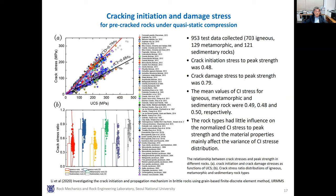This slide shows a very nice summary of the crack initiation and propagation mechanism of brittle rocks. The researchers collected 953 published test data for igneous, sedimentary, and metamorphic rocks. By fitting all data, they found that crack initiation stress was at about 48% of the peak strength, and crack damage stress was at about 79% of the peak stress. The mean values of crack initiation stress for igneous, metamorphic, and sedimentary rocks were 0.49, 0.48, and 0.50 respectively, concluding that rock type had little influence on normalized crack initiation stress.